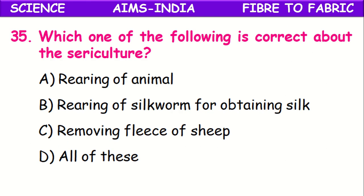Which of the following is a characteristic of sericulture? Sericulture is the rearing of silkworms for obtaining silk. This process of rearing silkworms to get silk fiber is called sericulture.